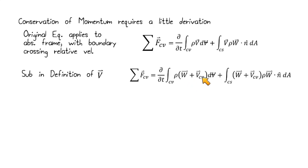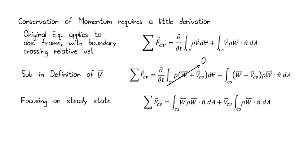The first thing we're going to do is substitute in our definition of our absolute velocity. That's just going to give us w plus v_cv. That's the definition of the absolute velocity. Now, in the case of conservation of momentum, we're only going to really look at steady state problems. There's a couple reasons for that. But in this case, it makes the equation quite a bit simpler. We're going to let this term go to zero because our d dt goes to zero. What that's going to leave us with is this.